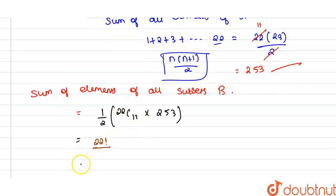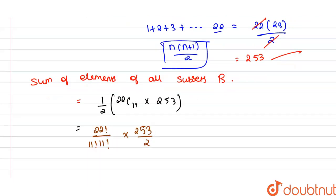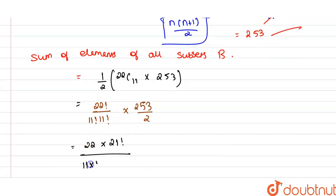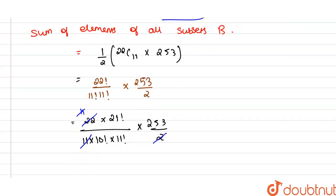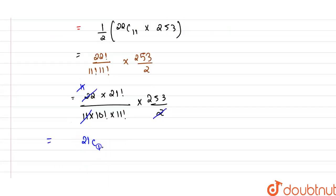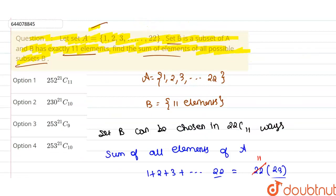We can write 22! as 22 × 21!, and 11! as 11 × 10!. So the expression becomes 22 × 21! / (11 × 10! × 11!) × 253 / 2. The 2 and 22 cancel giving 11, and then the 11 in the denominator cancels too. We're left with 21! / (10! × 11!) × 253, which is C(21,10) × 253.